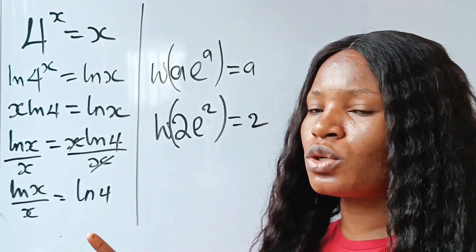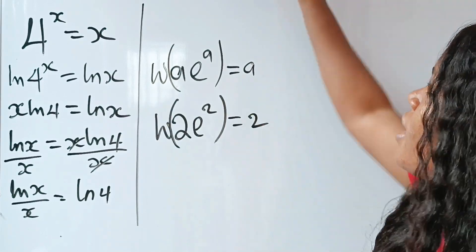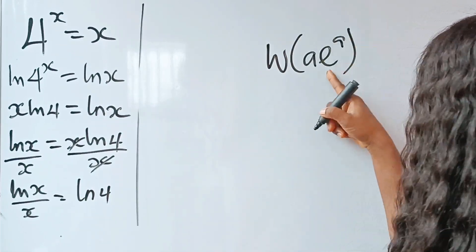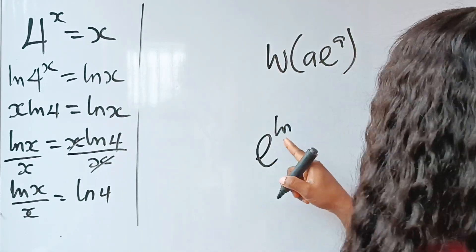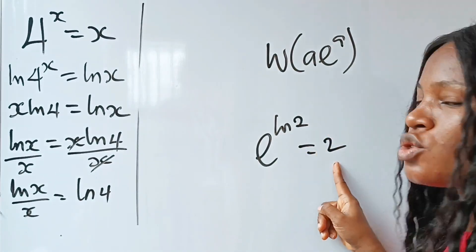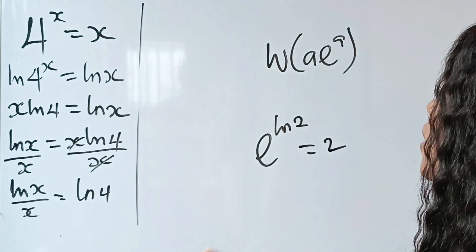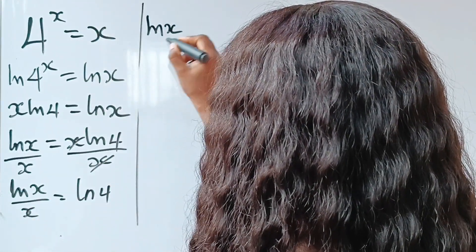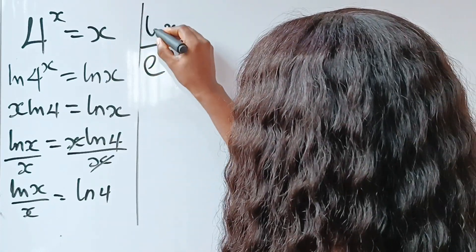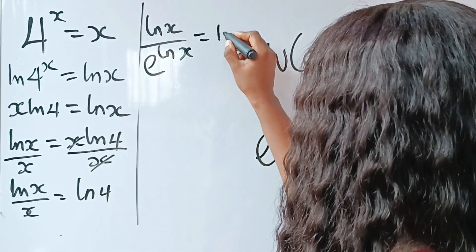I'll try to reshape this side of the equation into that form, so that when I apply the Lambert W function I get my solution. To do that, recall that e^(ln(anything)) equals that thing — for example, e^(ln 2) = 2. That means I can replace x with e^(ln x). So I'll rewrite ln(x)/x as ln(x) divided by e^(ln x), which equals ln(4).